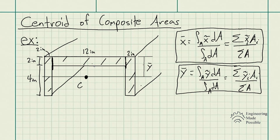Let's go ahead and number each composite area. This rectangle will be rectangle number one, this will be number two, and this will be number three. Since we see the centroid, the reference point for Y-bar is with respect to the top portion of this body itself. So we're going to base all of our calculations with respect to the top portion.